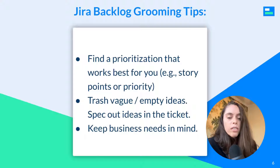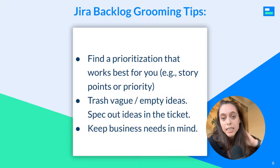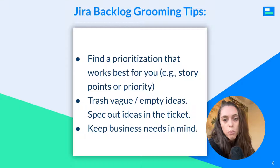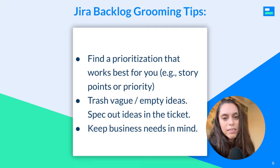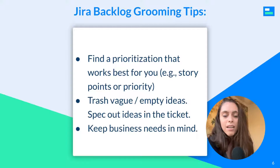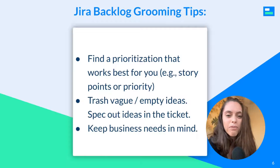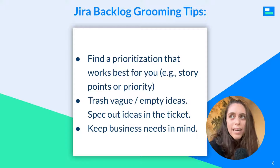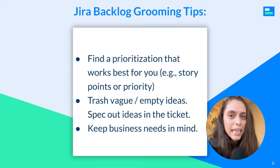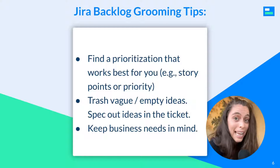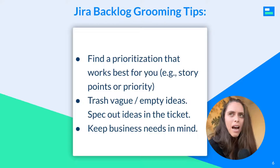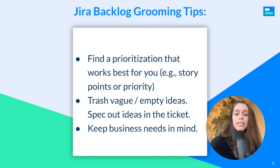Let's also talk about prioritization, whether using story points or priority fields. Identify what works best for you and establish those custom fields in Jira so that you can succinctly recognize what the most high-value work is in your backlog. Feel free to trash vague and empty ideas, and try to avoid tickets that are devoid of information — spec out ideas in the ticket. Recency bias is a thing: if you don't detail something at length, when you go back to it later it might not feel clear.